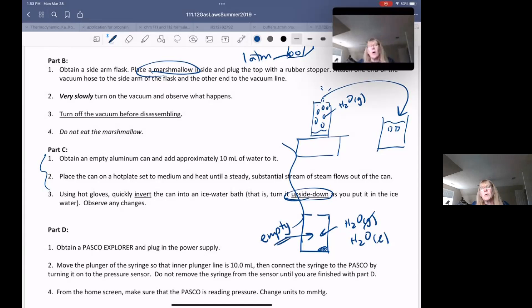So all we're doing is emptying the can, and when you invert it into the ice water, what you're doing is comparing the pressure inside the can, which is going to be close to zero because your can is empty, to the pressure outside the can, which is going to be one ATM.